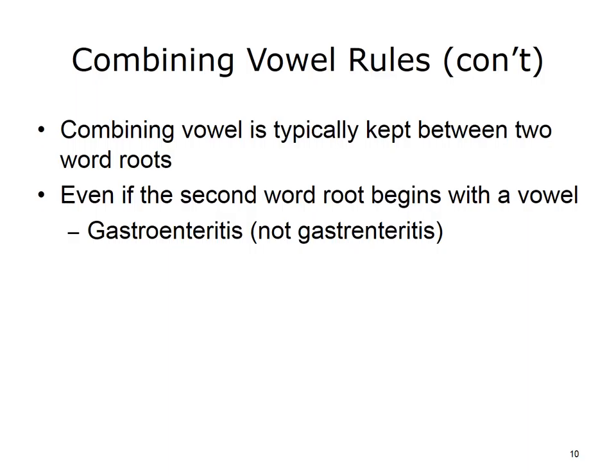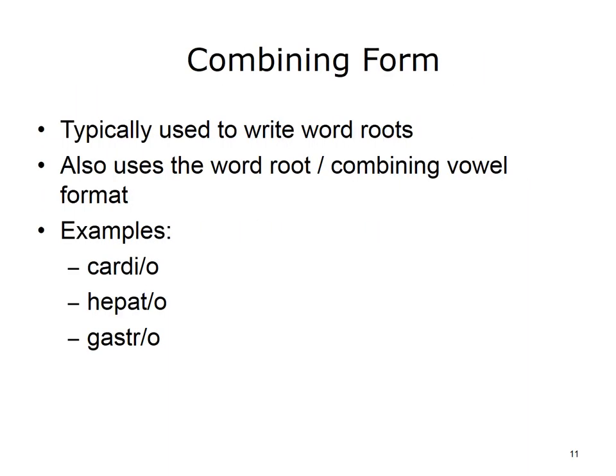This next rule deals with using a combining vowel between two word roots. We typically will use the combining vowel between two root words, even if the second word root begins with a vowel. The example used is gastroenteritis. The first word root, g-a-s-t-r, means stomach. The second root word is enter, which means pertaining to the intestine. The last part of the word is itis, which means inflammation.